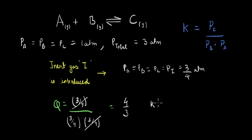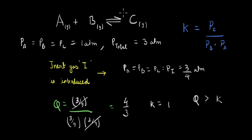Going back to our original equilibrium constant, the value of K was 1 because all partial pressures were equal to 1. After introduction of the inert gas, the reaction quotient is greater than the equilibrium constant. We know that when this happens, the equilibrium will shift in the reverse direction — towards the reactants, so we'll have more of A and B being formed. Because this is a formation reaction with 1 mole on the product side and 2 moles on the reactant side, we can say the equilibrium is shifting in the direction of increasing number of moles.